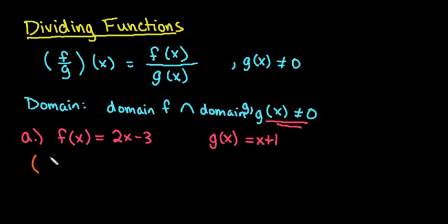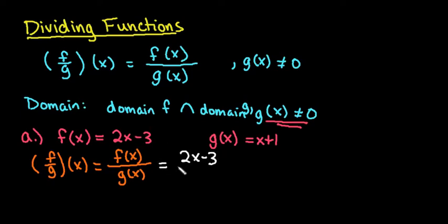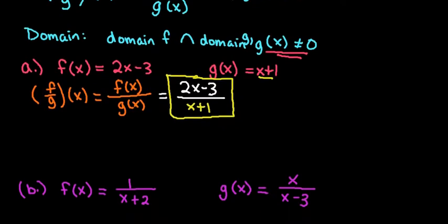For the first one, if it tells us to find f divided by g, or even if it said g divided by f, you would just put g(x) over f(x). The f and g just represent which equation you're talking about. So we simply take our f(x) equation and put it over our g(x) equation. For this particular one, our f(x) equation is 2x - 3 and our g(x) equation is x + 1. This would be our answer because there is nothing that we can simplify. This is the quotient, writing the answer as a division.